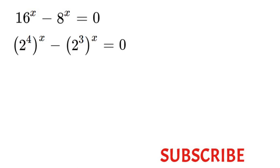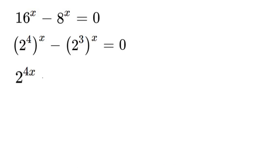So now that we've done that we can multiply our exponents. So we'll have 2 to the power of 4x minus 2 to the power of 3x is equal to 0.